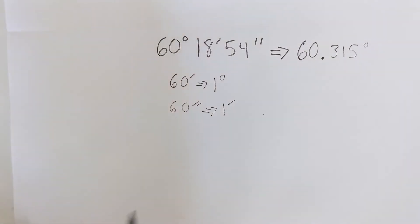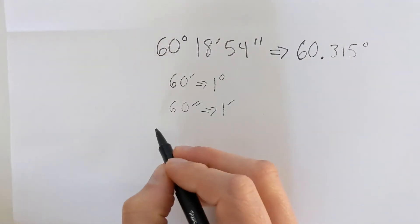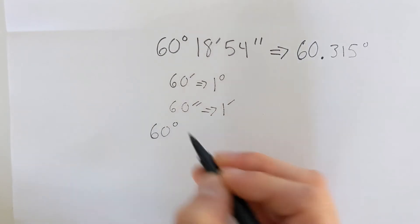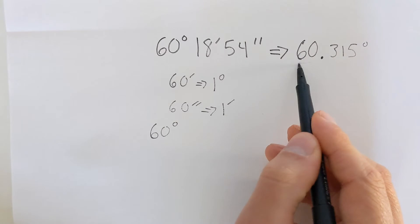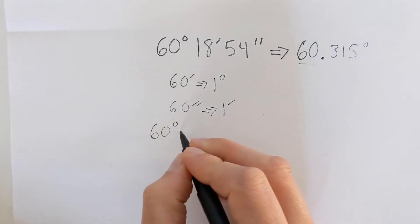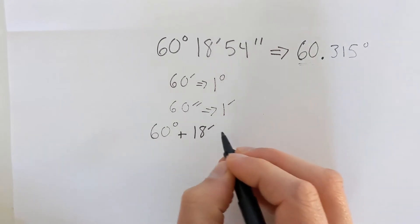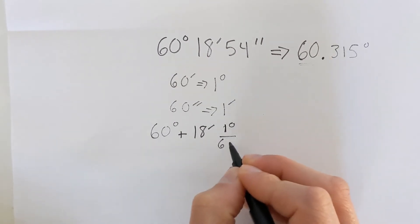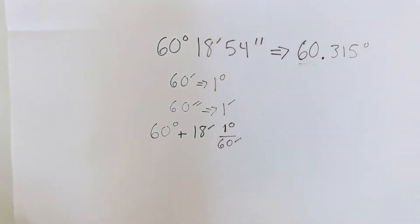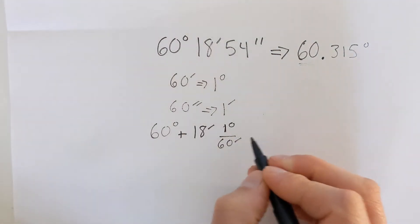So what we can do when we have our degrees, minutes, seconds, if we're looking to convert that to decimal degrees, that's a fairly simple process. We have 60 degrees. Then we're going to add our minutes, which is 18 minutes, and we've got to convert this from minutes to degrees. And so we have one degree for 60 minutes, so we're dividing the 18 by 60 essentially.